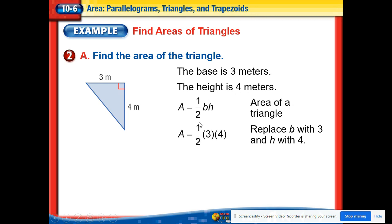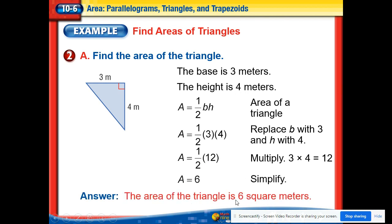So the base is 3 and the height is 4, so we multiply those together. 3 times 4 is 12, and then you multiply by half, or divide it by 2. 12 divided by 2. 12 divided by 2 is 6.